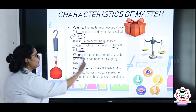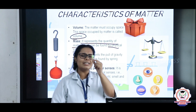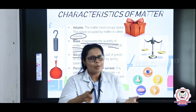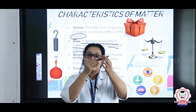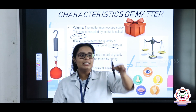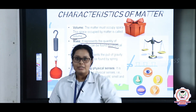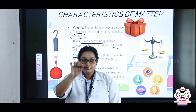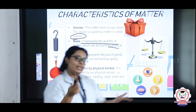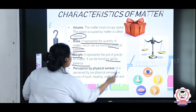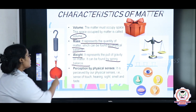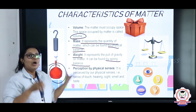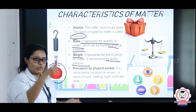Now let's come to the third characteristic — weight. There is only one small difference between weight and mass. Mass is the quantity, but weight is also the quantity plus it has the gravitational pull. Gravitational pull means if I have this pen and I drop it, it will directly go down — it will not float. This means the object has a weight which can be measured by the spring balance.